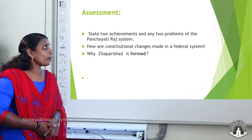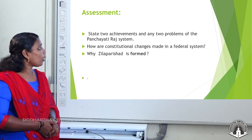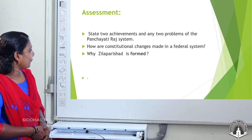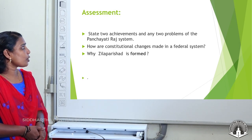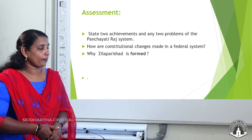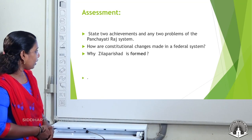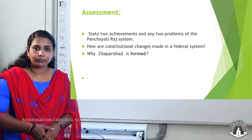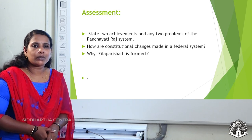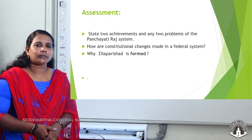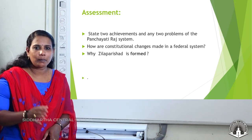You have to find out two achievements and two problems of the Panchayati Raj system. Then, how are constitutional changes made in a federal system? And why should India have a constitutional form? Try to find out the answers. We will meet again in another session. Bye bye.